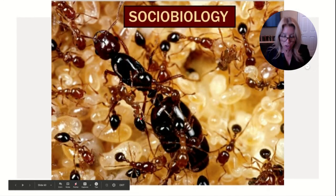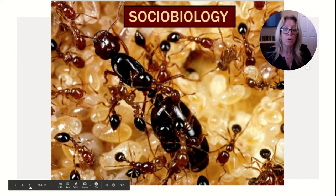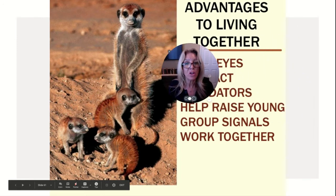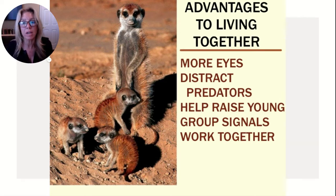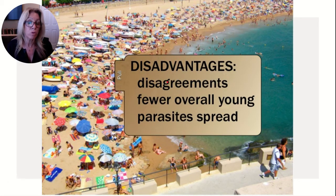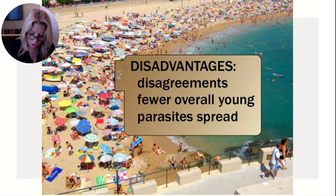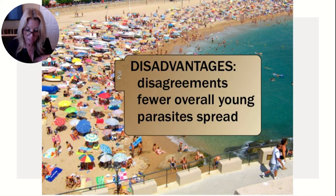Sociobiology applies the principles of evolutionary biology to the study of social behavior of animals — looking at evolution and why we do what we do when in a population. Advantages of living together, like meerkats: more eyes to spot predators, ability to distract predators, babysitters for the young, group signals, and working together. Disadvantages include more disagreements, fewer overall young if only one individual reproduces, and easy spread of parasites.